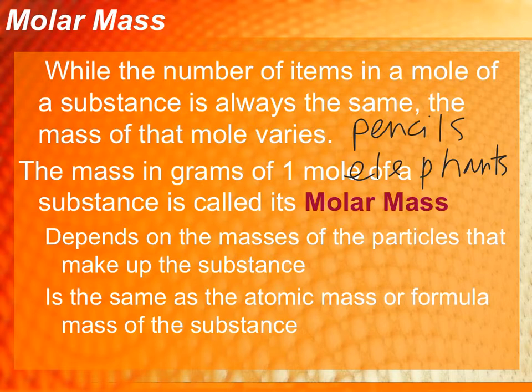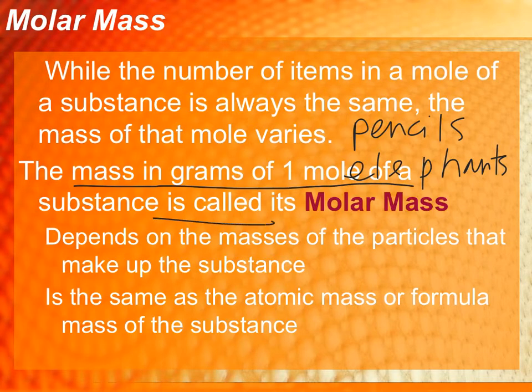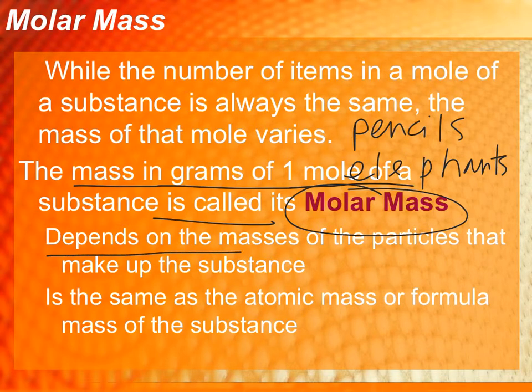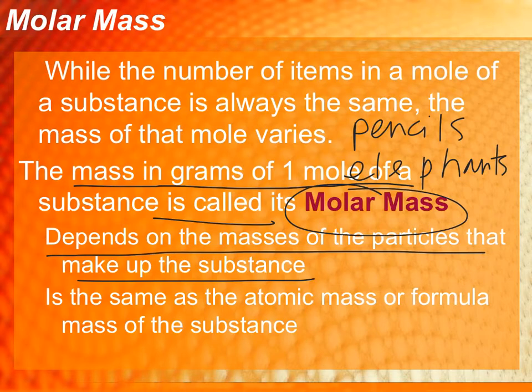So when we calculate the molar mass of something, it is the mass in grams of one mole of that substance, and this is given a special name of the molar mass. The molar mass is going to depend on the masses of the particles that make up a substance. And it is the same as the atomic mass, except for we're going to give it a gram value instead of using AMU—we're going to use grams instead, because that's something that we can actually measure in the classroom.